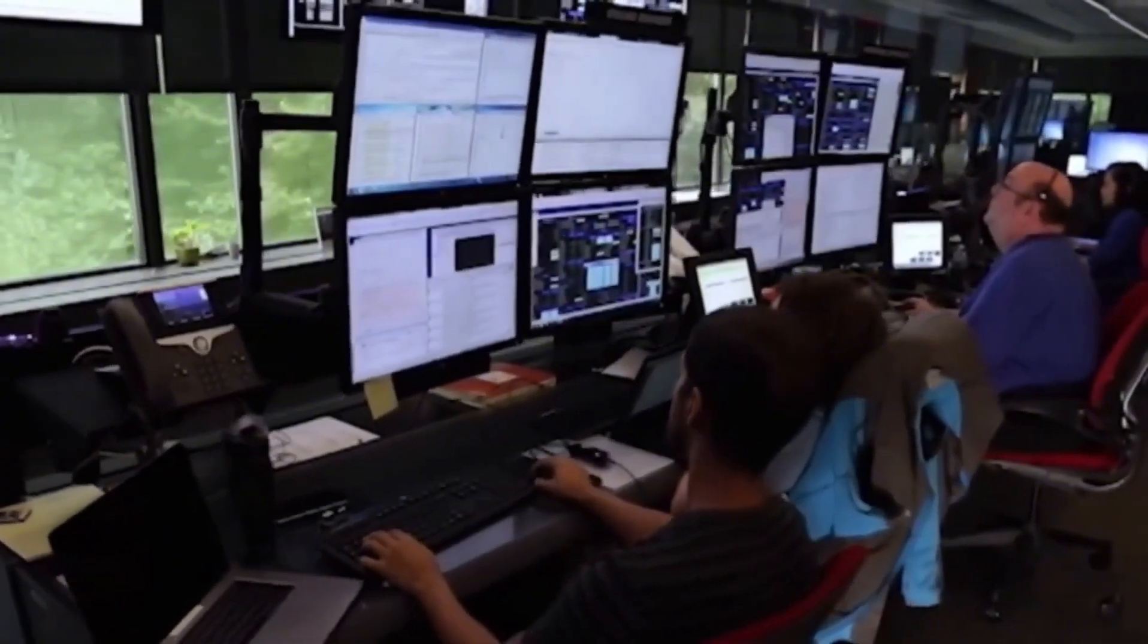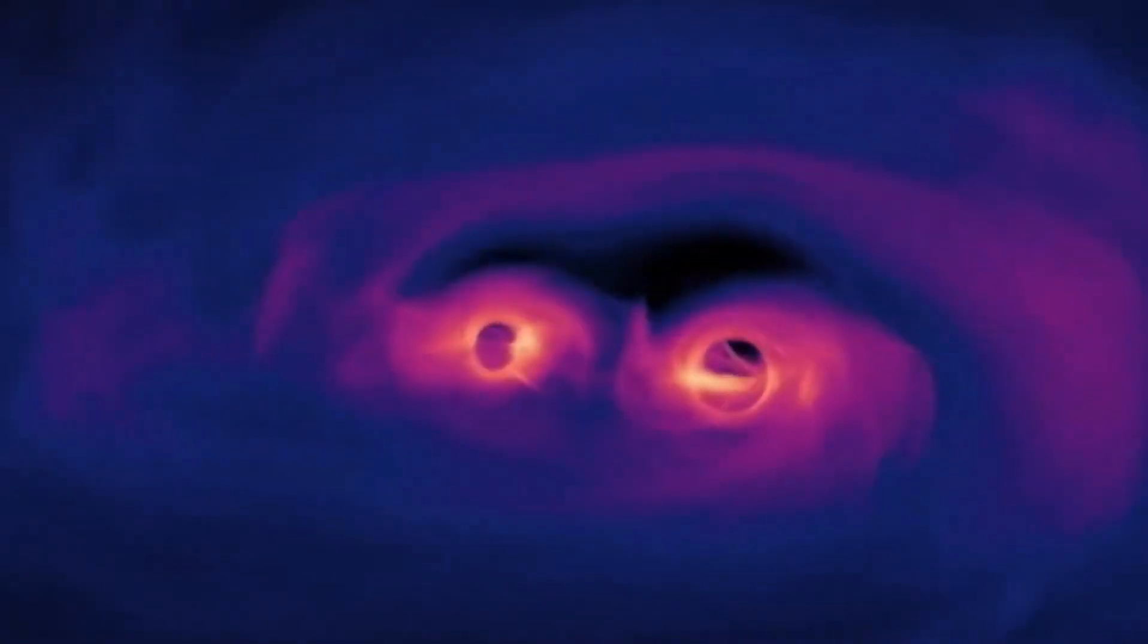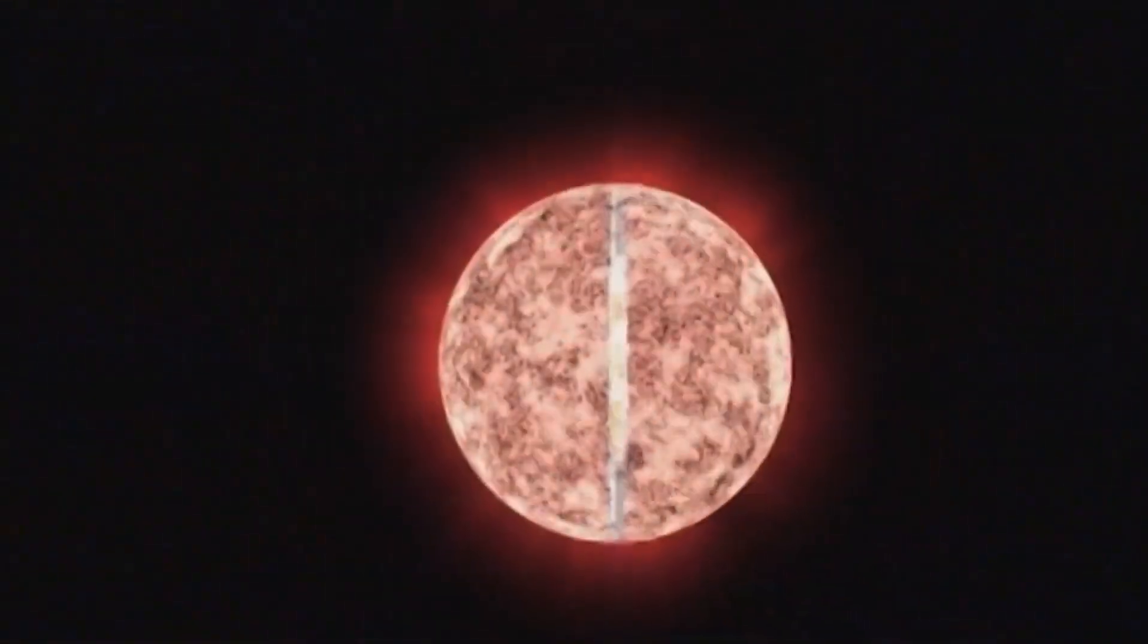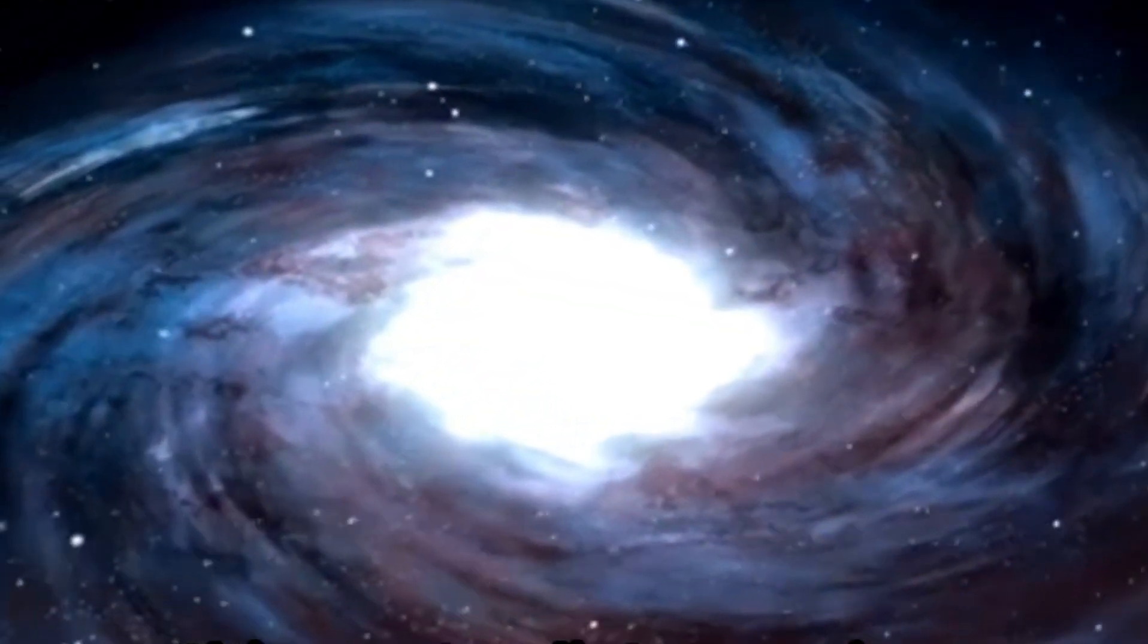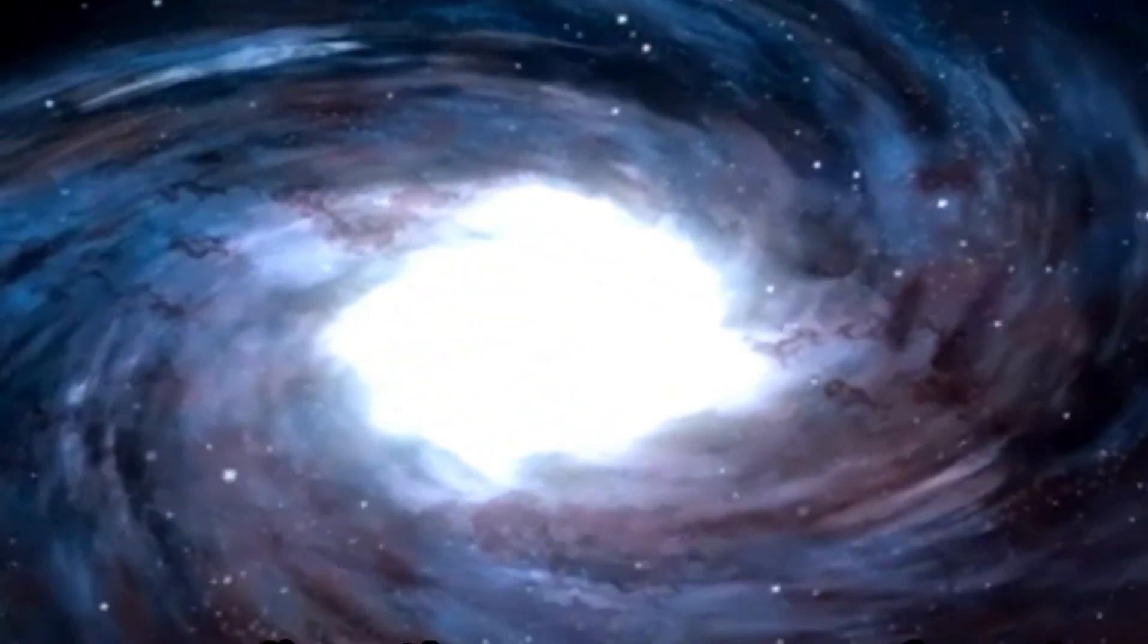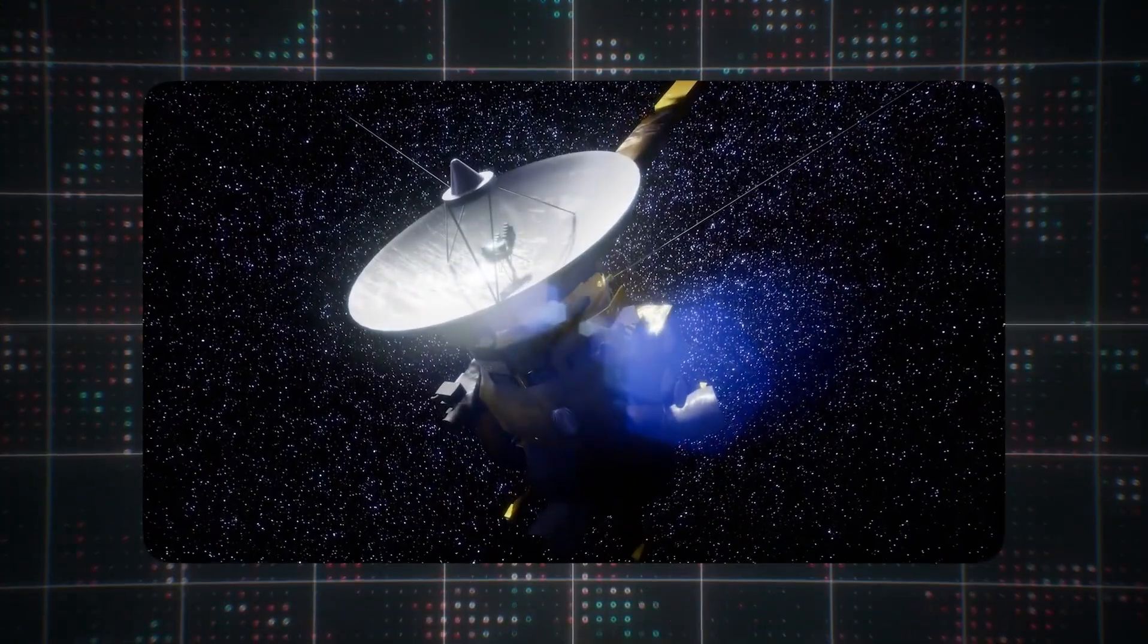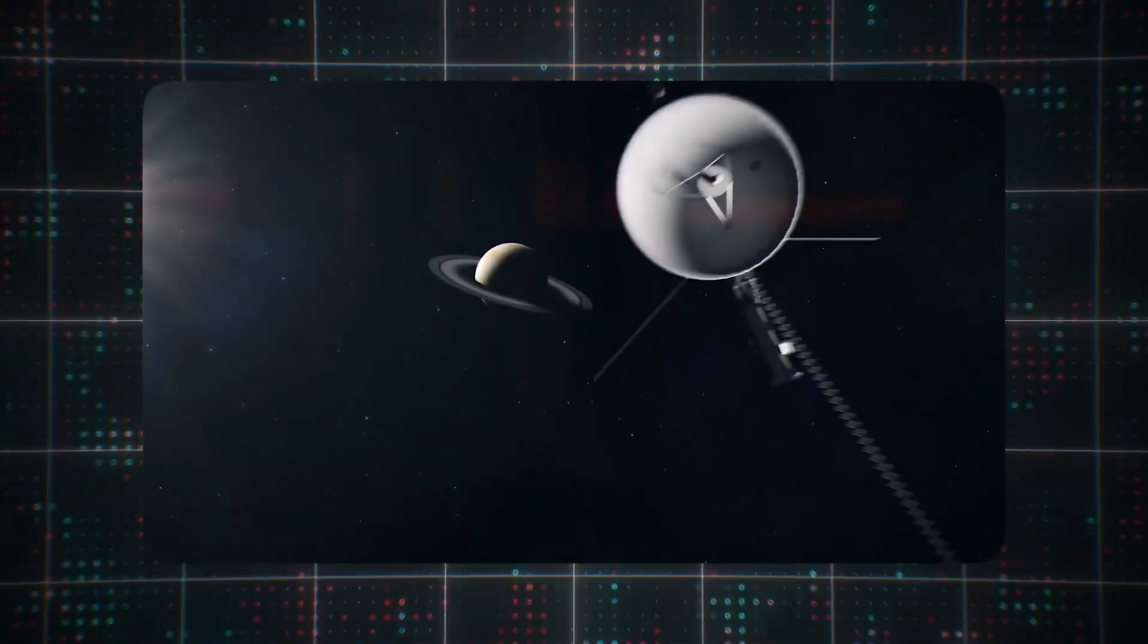Stellar black holes are the most commonly observed type of black hole in the universe. They are formed through gravitational collapse at the end of a massive star's life. Once a massive star exhausts all its nuclear fuel, the outward pressure generated by nuclear reactions can no longer counteract the force of gravity pulling inward. The gravitational force becomes dominant, causing the star to collapse under its own weight. This collapse results in the formation of a stellar black hole.